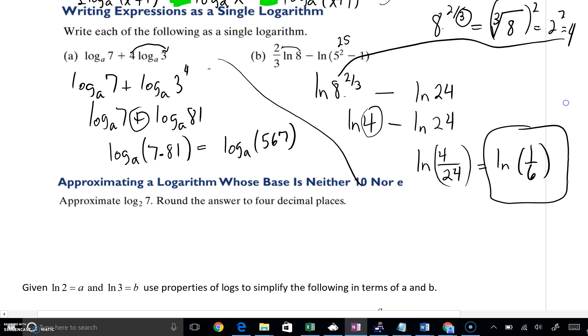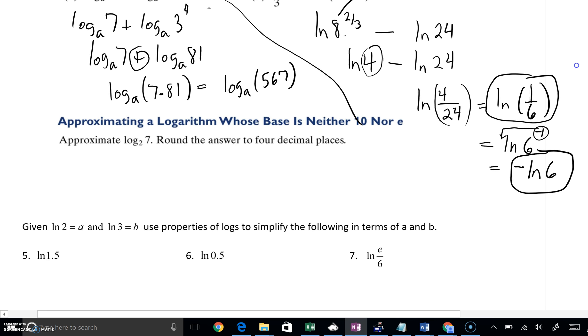Now by the way, one little thing that you should be aware of, I do want to come back to this. 1 over 6 you could also think of as 6 to the negative 1. That's a fine answer, that's definitely okay. But if you thought of that as 6 to the negative 1, you could bring that negative out in front as a power. So here's another answer that you could have.